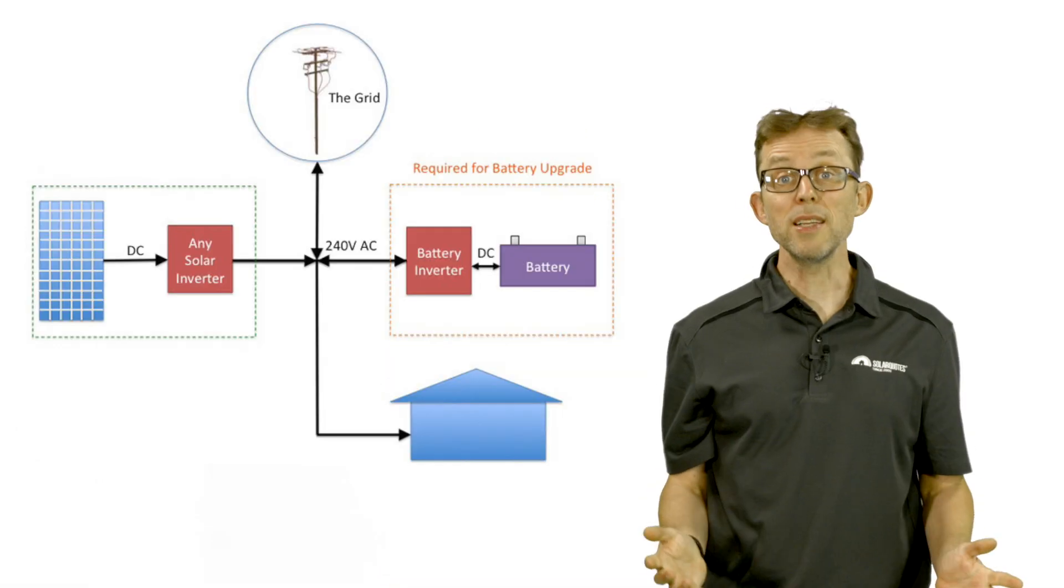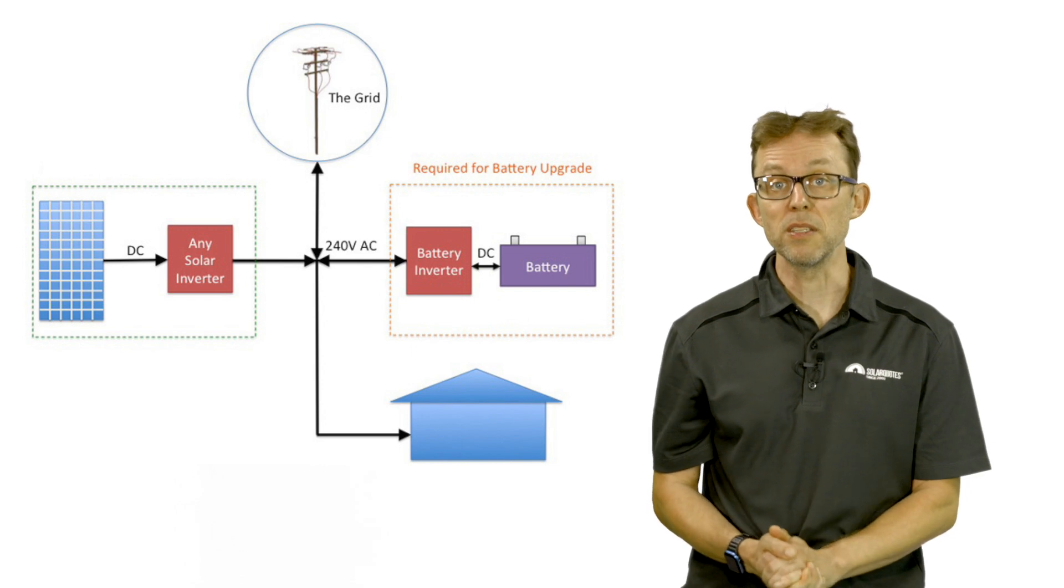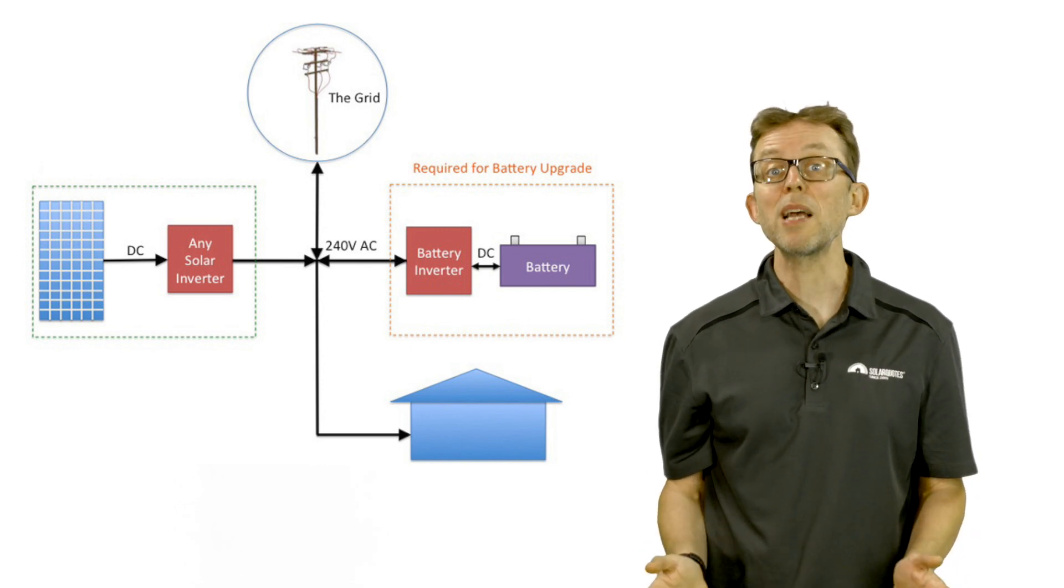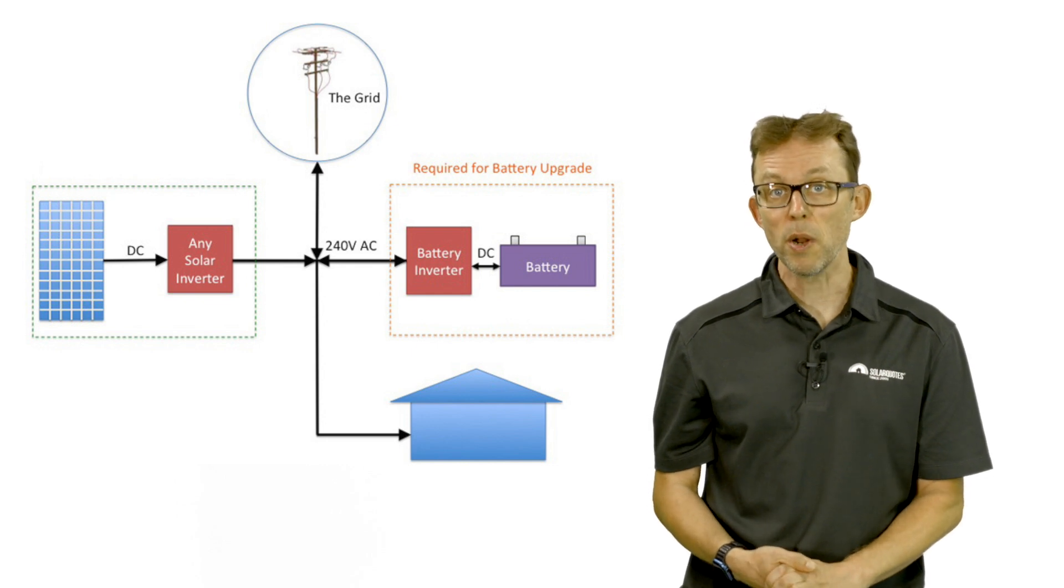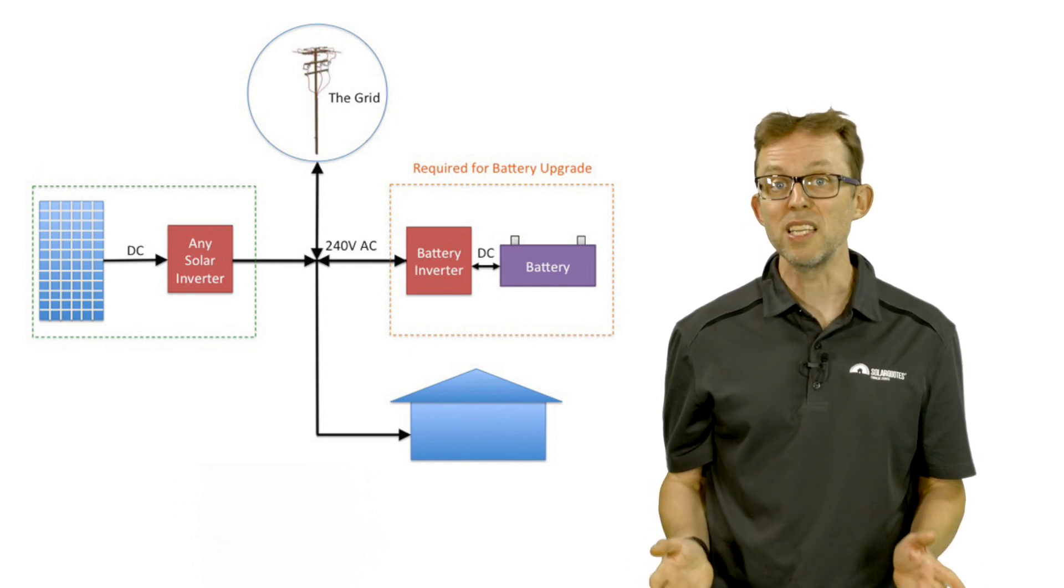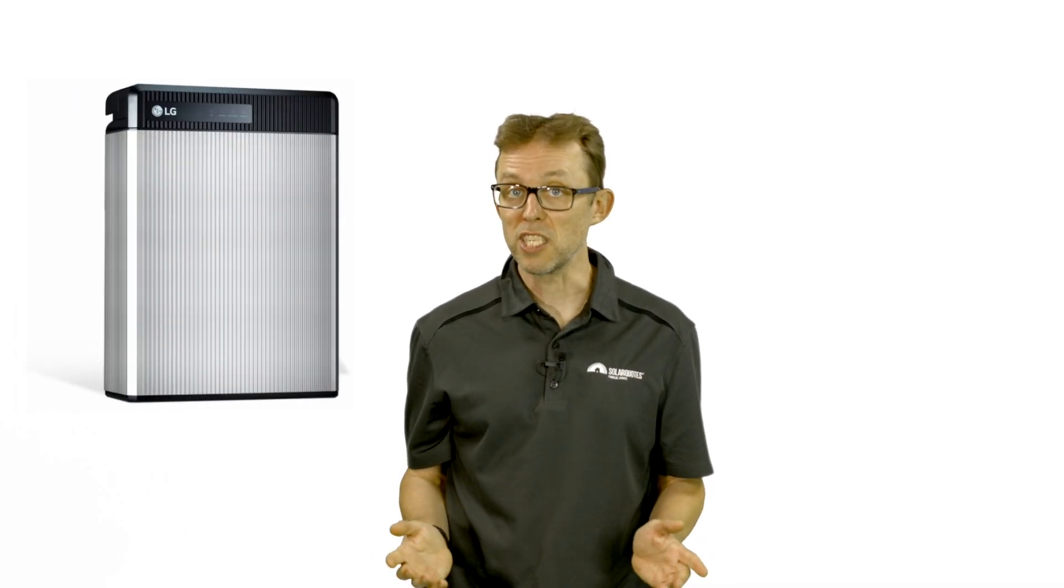The other way to integrate a battery is through AC coupling. With AC coupling, you need two inverters. A solar inverter and a special battery inverter, which converts the AC output of the solar inverter back into DC to charge the battery. Some battery options, such as the Tesla Powerwall, come with a battery inverter built in. The Powerwall can only be AC coupled. Others, like the LG Chem, need an external battery inverter to be installed on the wall next to them.